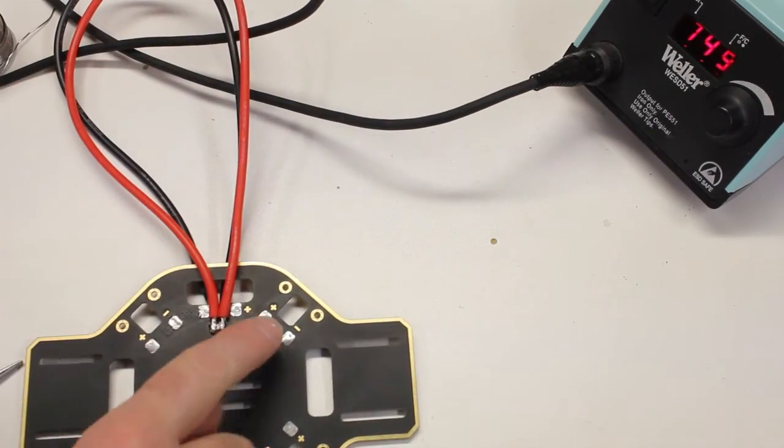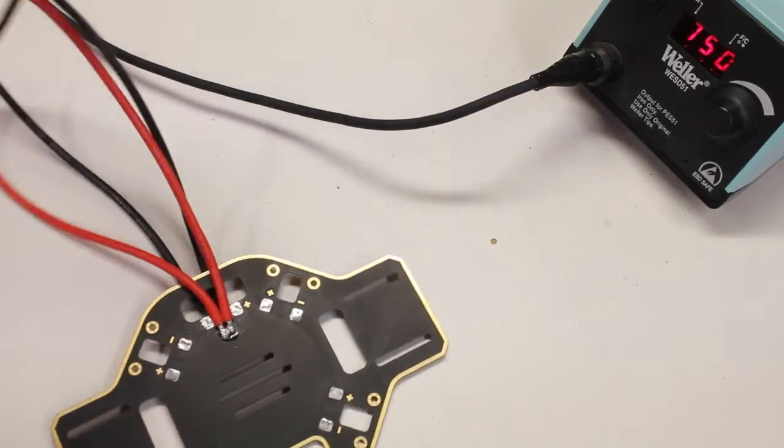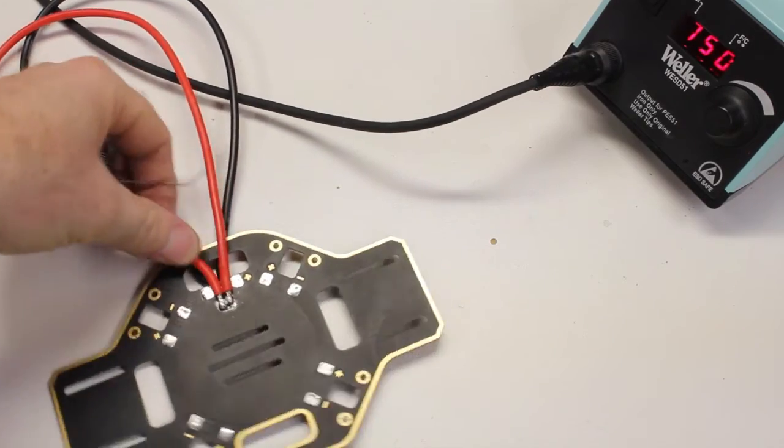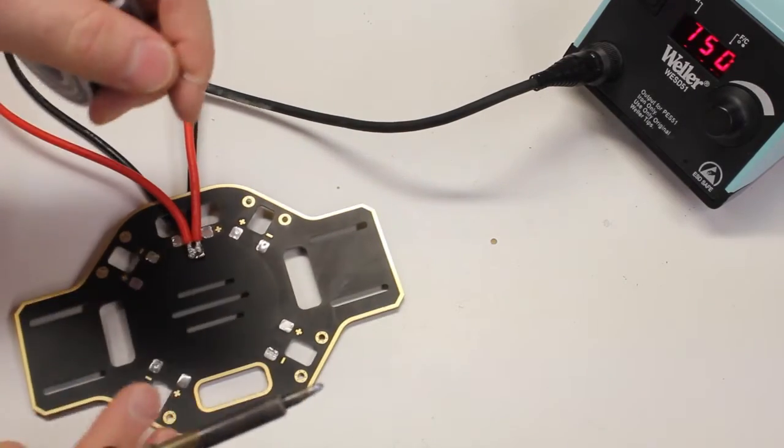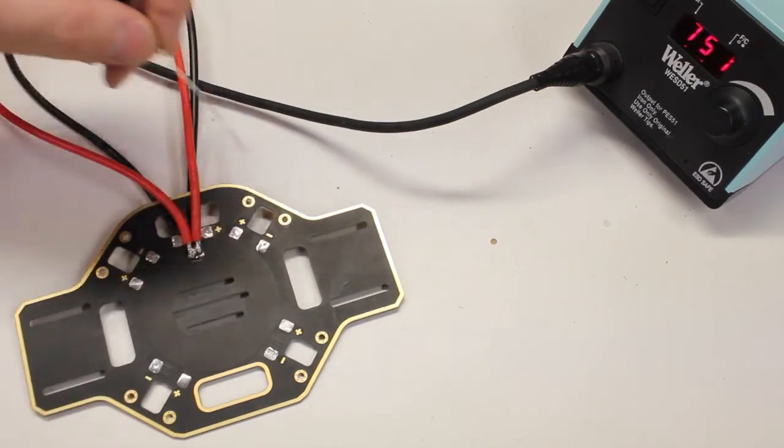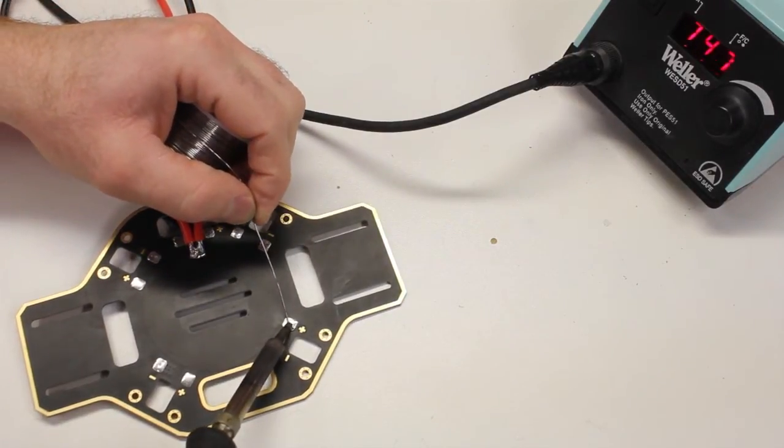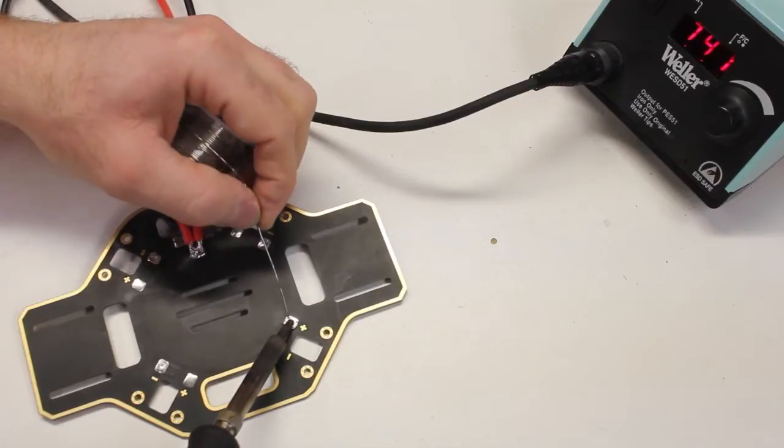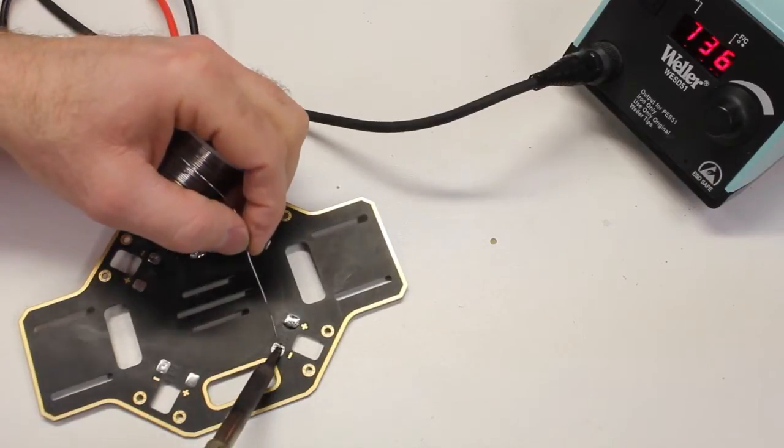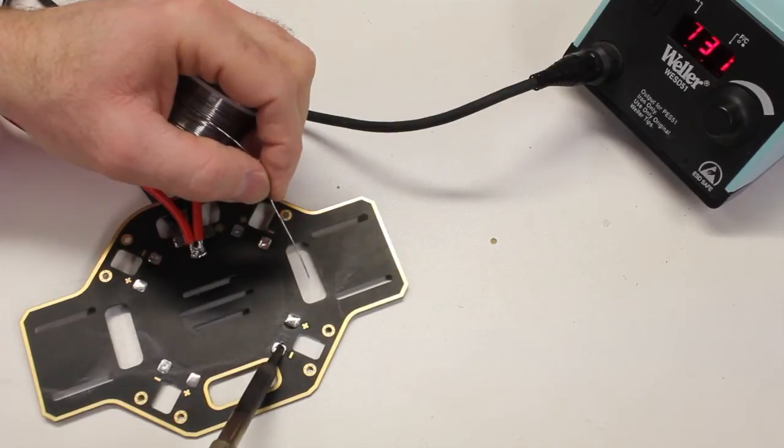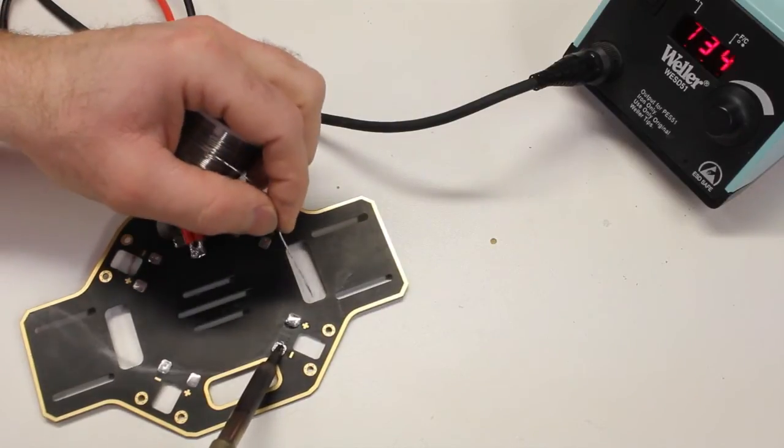Now, these spots have already been tinned because the person that I bought this from assembled it, and what I'm going to do real quick is just throw one ESC on. I've already cut the wires to the length that I want, and again, I'm just going to start by tinning. I'm going to put a little solder on there. Do this one. Hold it for a second.